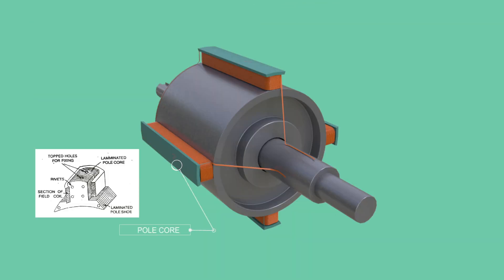Pole cores are used to effectively transfer magnetic flux and are made with fairly thick steel laminations. Such insulated laminations reduce energy loss due to eddy current formation.